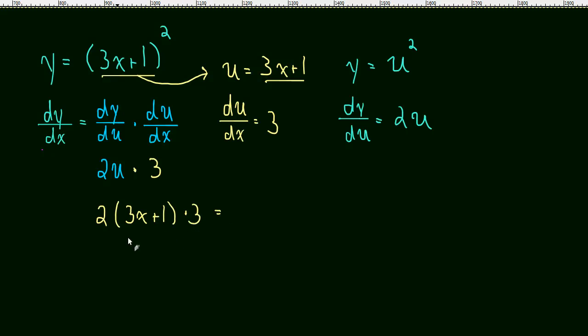And that should look familiar from the last video. This whole thing simplifies to 18x plus 6. So this is another way to look at the chain rule.